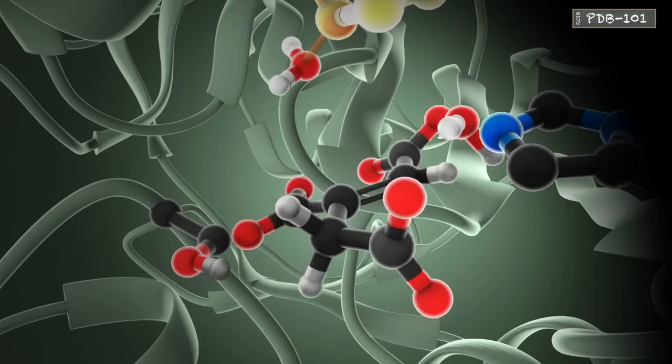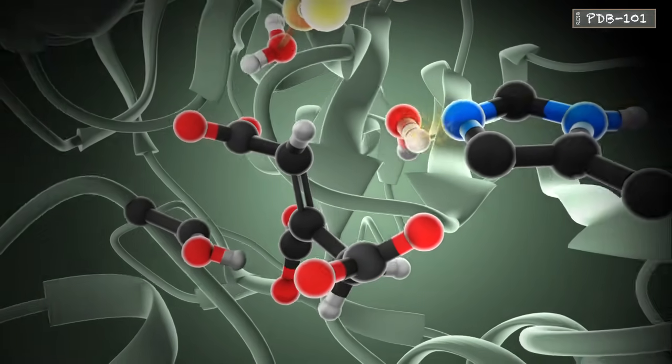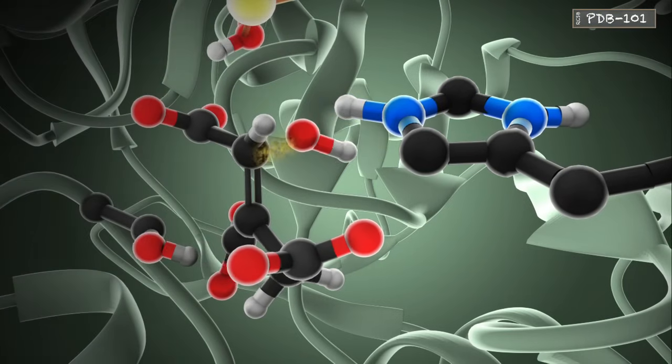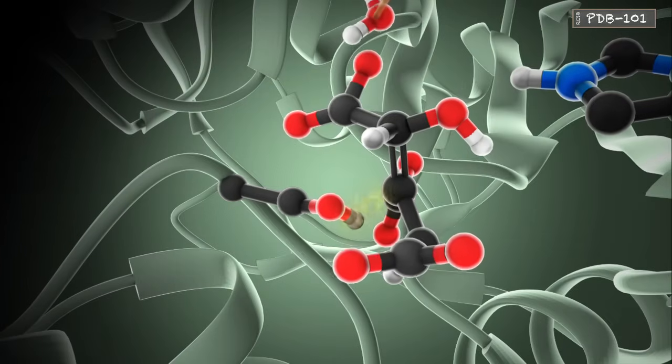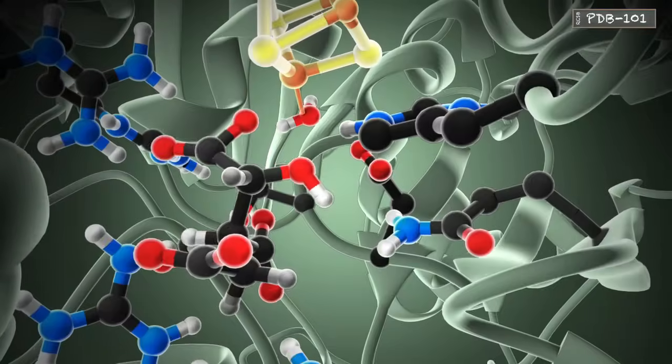Cisaconitate then flips upside down, and the complementary hydration reaction is performed. In this step, histidine grabs a hydrogen atom from a passing water molecule, placing the resulting hydroxyl group back onto the substrate. Serine then returns its hydrogen atom, and the final product isocitrate is released.